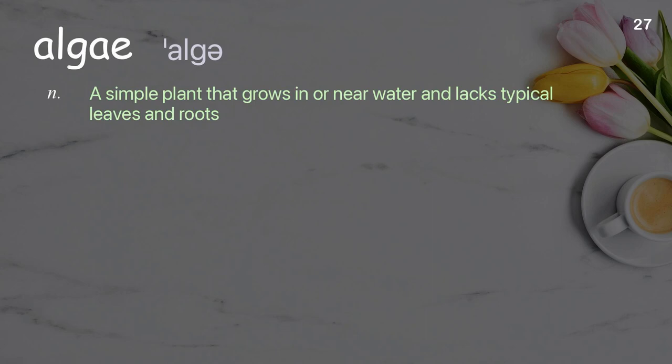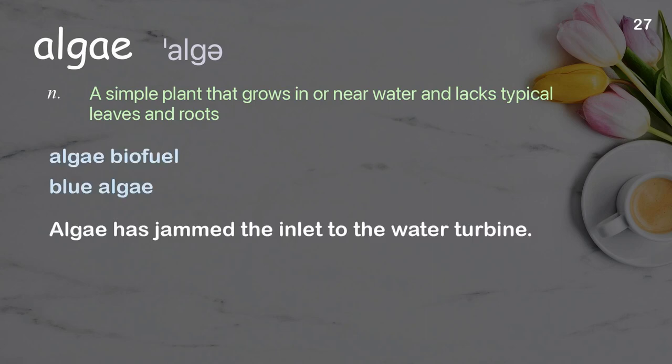Algae. A simple plant that grows in or near water and lacks typical leaves and roots. Examples: algae biofuel, blue algae. Algae has jammed the inlet to the water turbine.